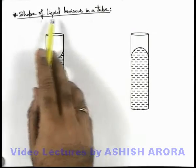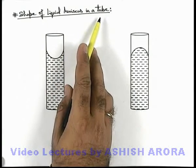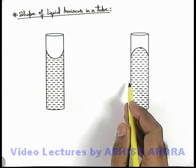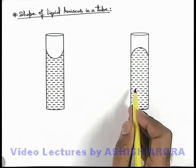Let's discuss about the shape of a liquid meniscus in a tube. Say in 2 identical narrow tubes we have taken 2 different types of liquids.